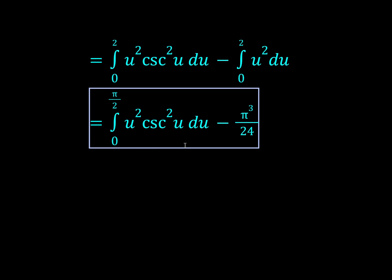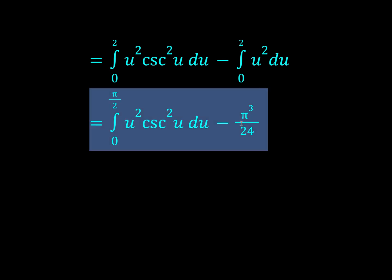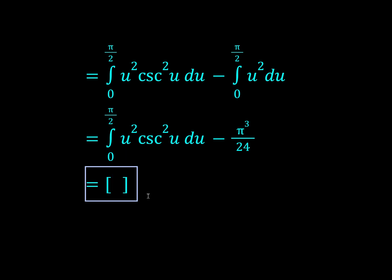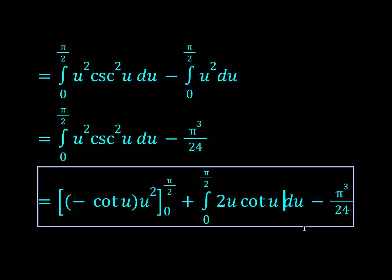Okay, now to deal with this, I guess we have to do integration by parts. So we're going to integrate the csc squared u, and then we're going to differentiate the u squared. Okay, so we have this.